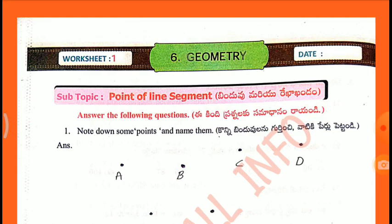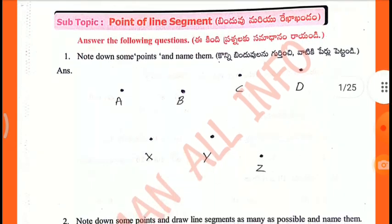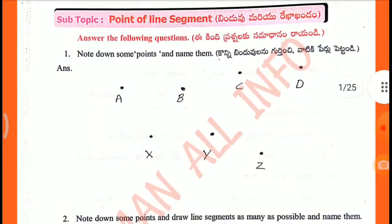Answer the following questions. First one: Note down some points and name them. Points are A, B, C, D, X, Y, Z.